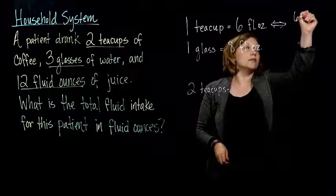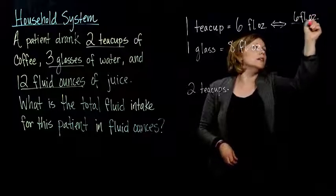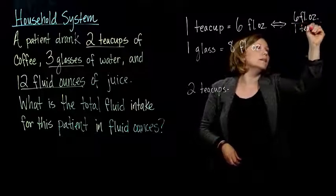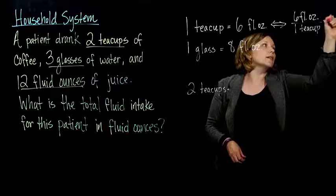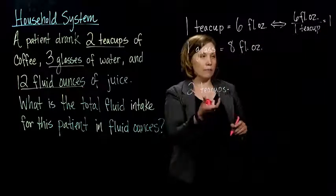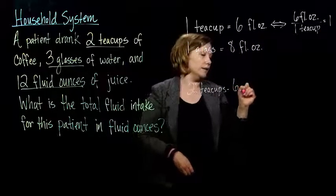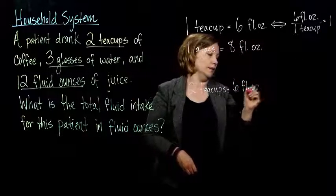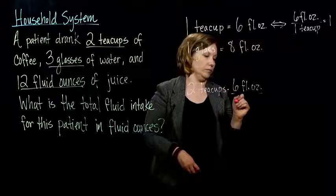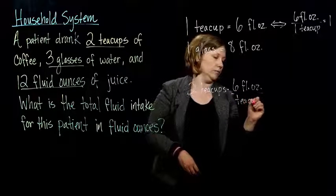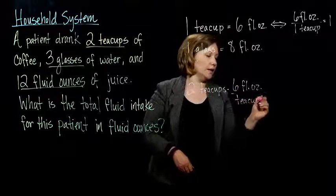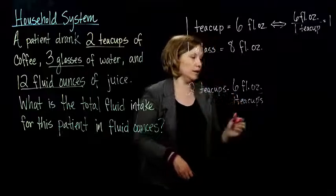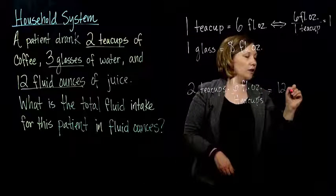I would end up with six fluid ounces to one teacup is the same thing as one. So, if I multiply by, my teacups are going to cancel, right? And I end up with 12 fluid ounces.